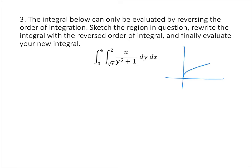So y equals the square root of x looks like a curve, and y equals 2 is a horizontal line. These two curves meet at the point (4, 2). The outer integral goes from x equals 0 to x equals 4, so that region R is defined. To reverse the order of integration, I have to slice the region horizontally. The left end of this horizontal slice is on the y-axis, x equals 0. The right end is on the graph of y equals the square root of x, which is x equals y squared.